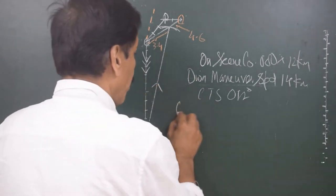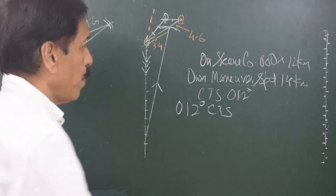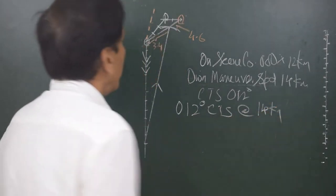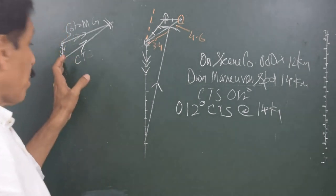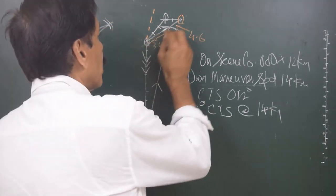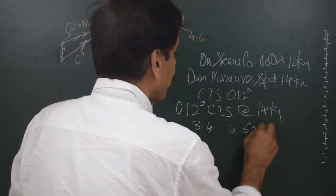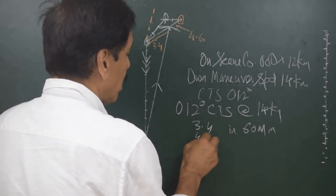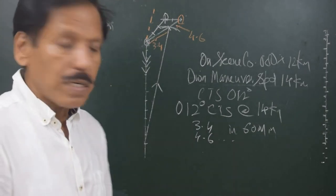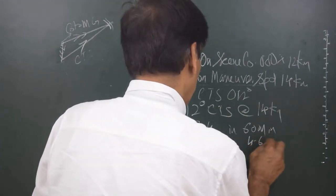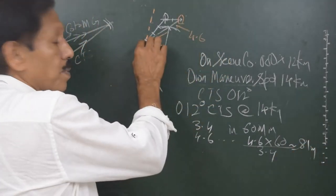The course to steer comes out to about 012 degrees. So on a course of 012 at 14 knots, I reach a point on the CMG line, forming a proper course-steered/course-made-good triangle. This means I will cover the distance made good in 1 hour. So if I cover 3.4 miles of speed made good in 1 hour, I can calculate how much time I will take to cover the total distance of 4.6 miles — that is 4.6 × 60 ÷ 3.4.